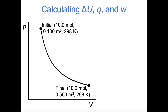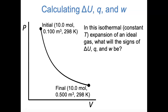Now that we've seen the first law of thermodynamics, let's revisit our example of the isothermal expansion of an ideal gas, putting some numbers to it and thinking about the values of ΔU, Q, and W. Before looking at numbers, let's think qualitatively about what we expect the signs of ΔU, Q, and W to be for the isothermal expansion—do we think each is positive, negative, or zero?